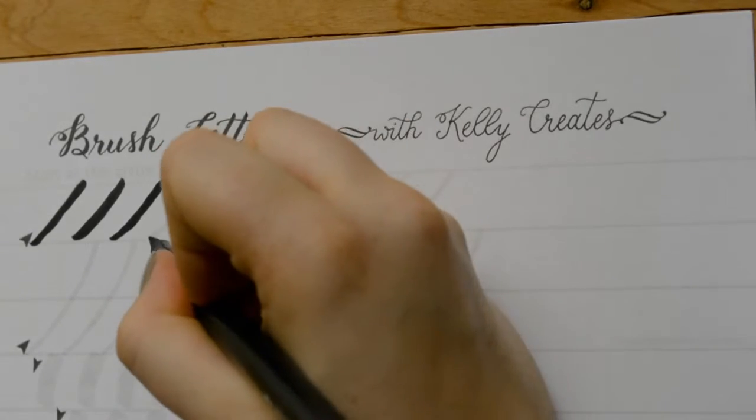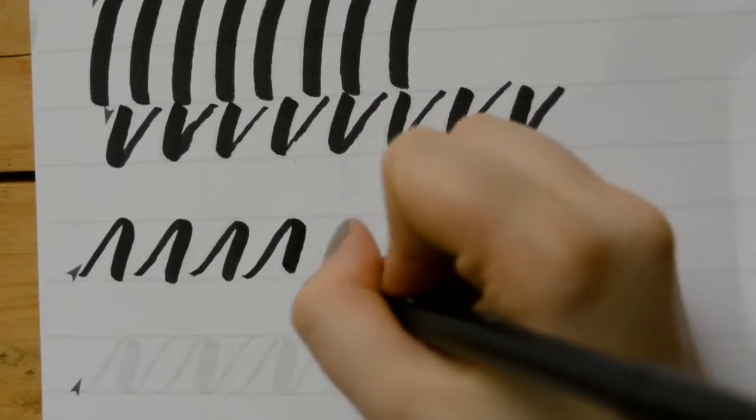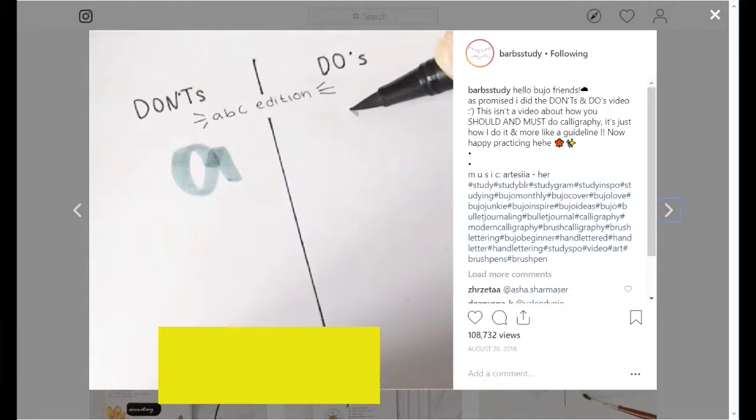After this, I then started trying to practice the angles and strokes. As I started getting the hang of it, I thought I could start trying to form letters.